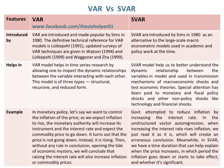An example of a VAR model: in monetary policy, let's say we want to control inflation. As we expect inflation to rise, the monetary authority will increase its instrument — the interest rate — and expect the commodity price to go down. It turns out that the price is not going down; instead, it is rising. Then, without any conclusive rule, we conclude that raising the interest rate will also increase inflation or commodity prices.